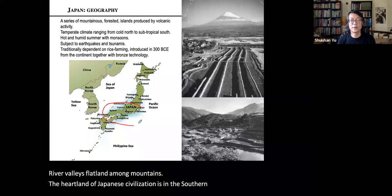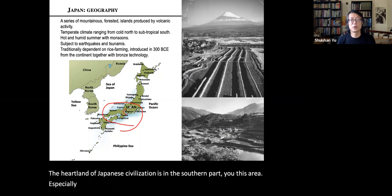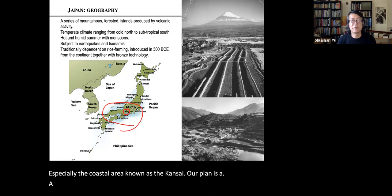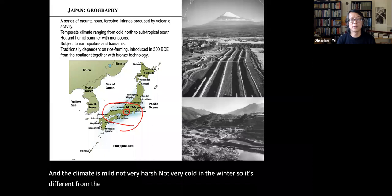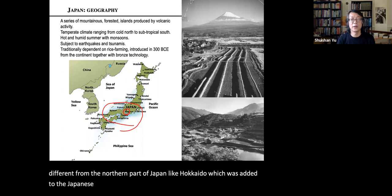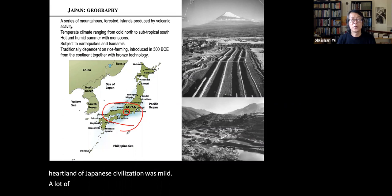Arable land was very precious, confined within river valleys and flatland among mountains. The heartland of Japanese civilization is in the southern part — especially the Kyoto area, known as the Kansai plain — a relatively large flatland on the coast near today's Kyoto where the climate is mild, not very cold in winter.